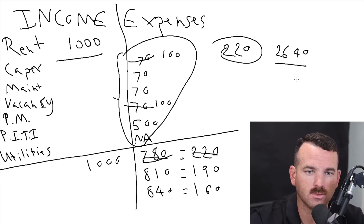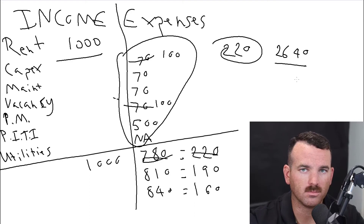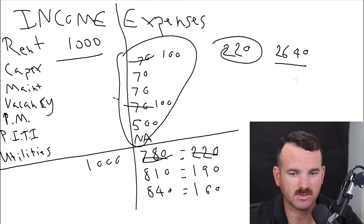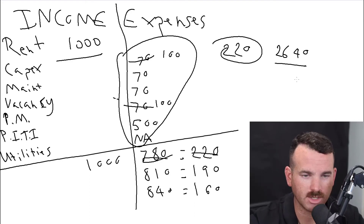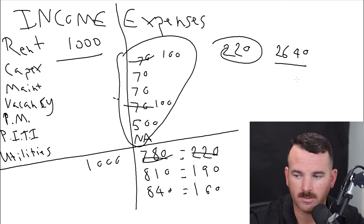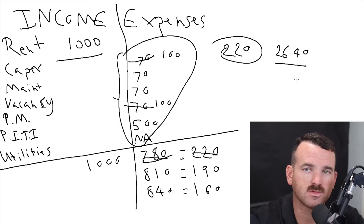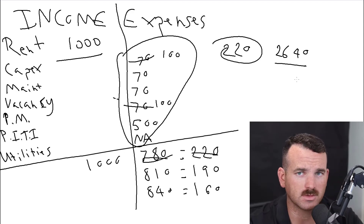It is income minus expenses equals net operating income. This is super basic — this is definitely not how I would recommend you buy your first property, but you could buy a property this way if you're familiar with the numbers.